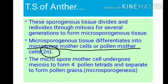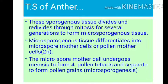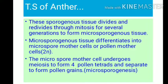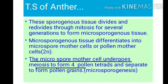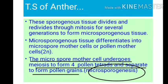Microsporogenous tissue differentiates into microspore mother cells or pollen mother cells (2N). The microspore mother cell undergoes meiosis to form four pollen tetrads, which then separate to form pollen grains. During meiosis, the chromosome number is reduced to half — for example, 2N=10 becomes N=5.